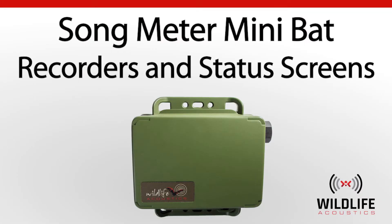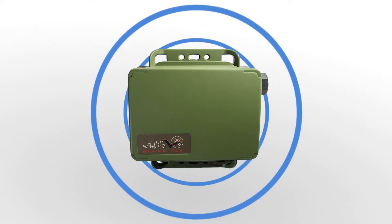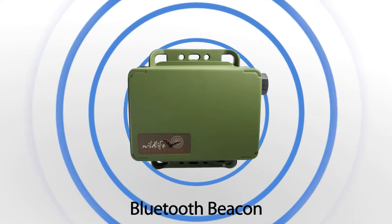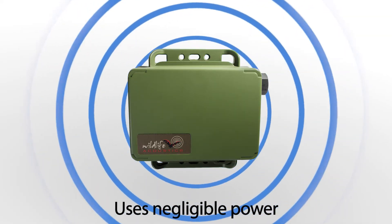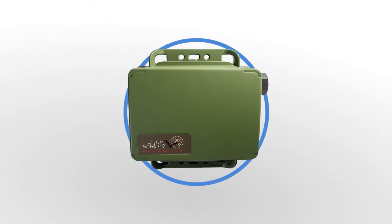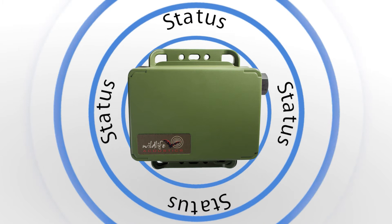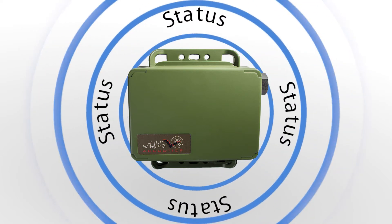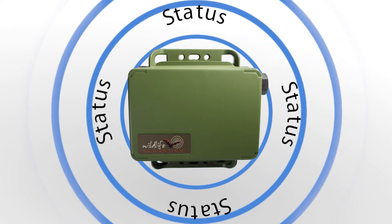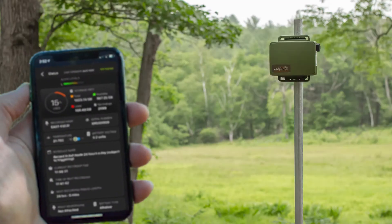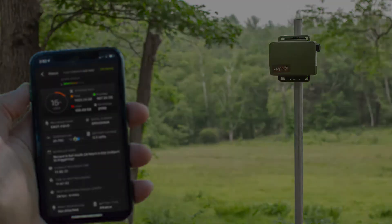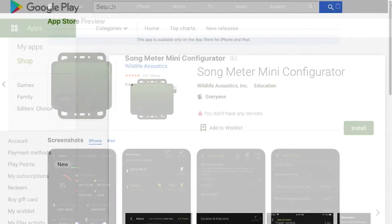Welcome to Wildlife Acoustics. When the Song Meter Mini Bat is powered on, it emits a Bluetooth beacon every few seconds. This function uses negligible battery power. The Bluetooth beacon includes a status update of the current condition of the recorder. This status beacon is received by an Android or iOS device running the Song Meter Mini Configurator app, which is a free download from the Apple App Store or Google Play.